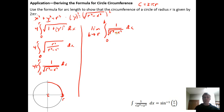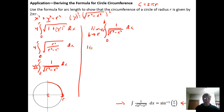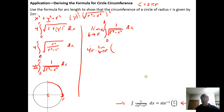We can integrate this using trigonometric substitution or by reading the pattern from an integral table. Applying the identity, and keeping the 4r factor out front, we take the limit as b goes to r of 4r times the sine inverse of x over r, evaluated from zero to b. Plugging in, we get 4r times the limit as b goes to r of sine inverse of b over r minus sine inverse of zero over r.